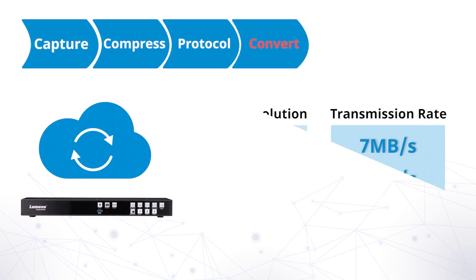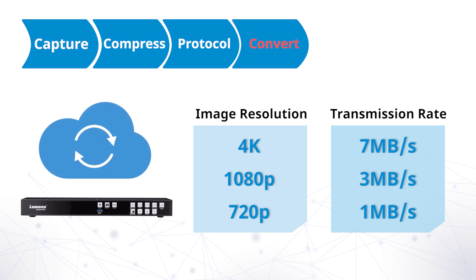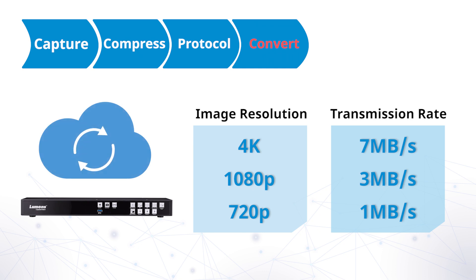When the network cannot handle high data rates, the media processor can convert a video to lower resolution SD to keep the transmission smooth. The conversion process can also be managed by the streaming network in the cloud, giving the viewers the option to watch the video in SD, HD, or 4K resolution.